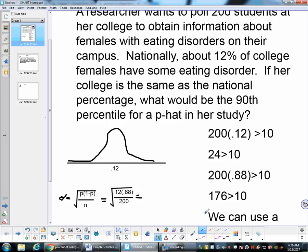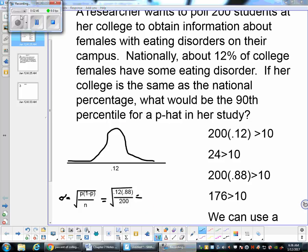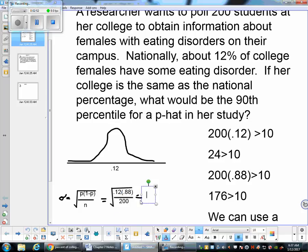Now if I fill this in, I get 0.0229. So let's do 0.023 as our standard deviation. So now we have our mean and we have our standard deviation, 0.023.